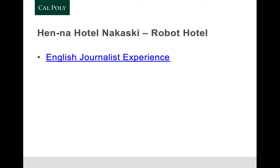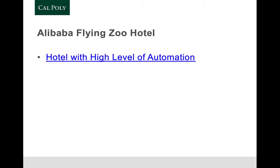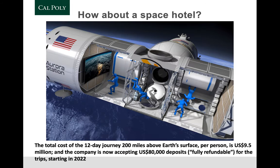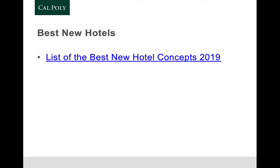Graduate Hotels are developing in college towns from former Holiday Inns and Quality Inns. There's also the robot hotel concept — worth noting that Henna Hotels is now using fewer robots. The Alibaba FlyZoo Hotel and space pod hotel concepts are also emerging. On the extreme end, a space hotel experience is coming sooner than we think — at about $9.2 million for a stay, with a deposit of around $80,000 to reserve your spot.